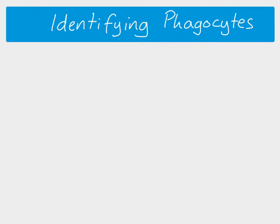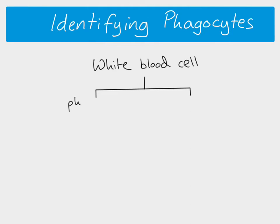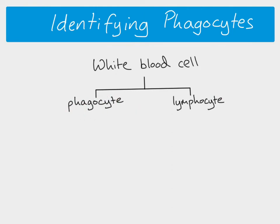There are actually lots of different kinds of phagocytes and lymphocytes, but we just need to know about three of them. Our white blood cells can be split into phagocytes and lymphocytes. Lymphocytes are involved in our specific immune response, and phagocytes are involved in our non-specific immune response, although there is a link between the two.